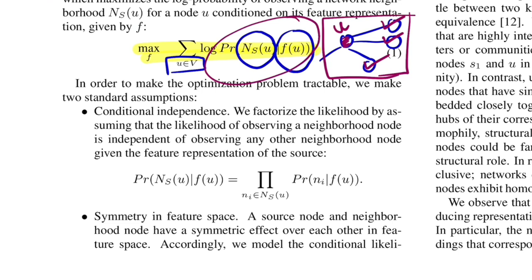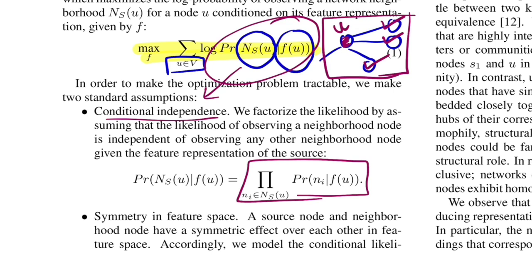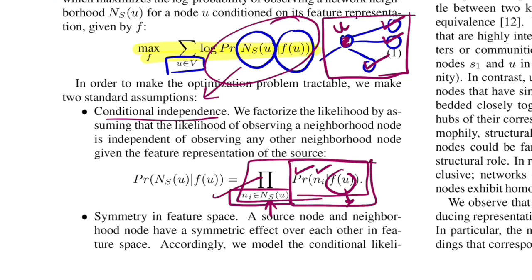To solve this log likelihood, they assume conditional independence, factorizing the likelihood into independent segments for every neighbor of node U. NS is all neighbors for node U under sampling strategy S. So for each neighbor N_i, if the representation is good enough, the probability of predicting that neighbor given the central node's feature representation will be high, and so will the product — that's how the log likelihood is calculated.